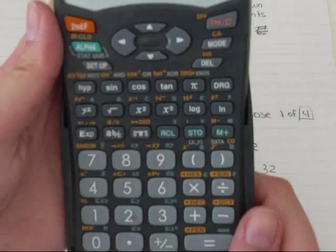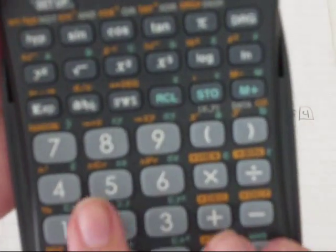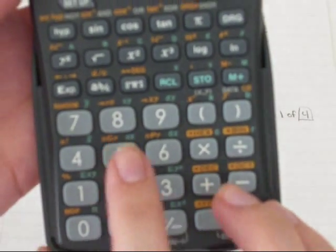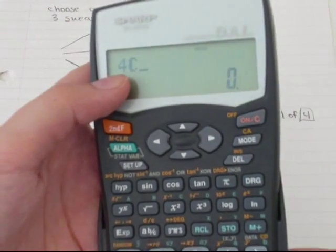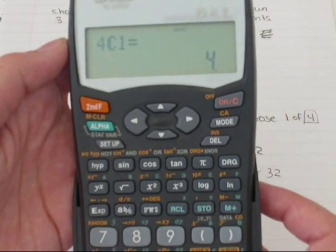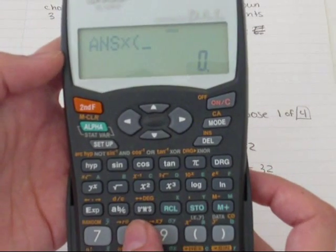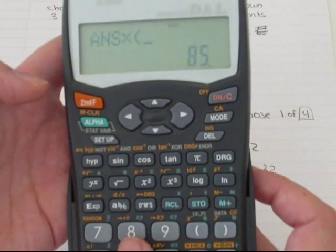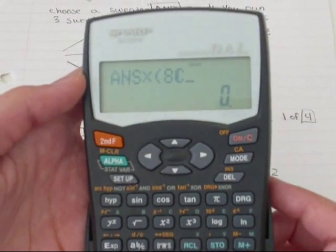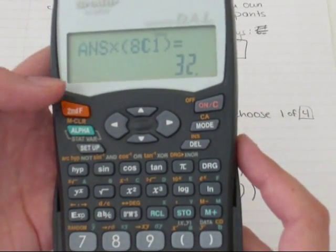So I'm going to do four choose one. So I'm going to go four, second function, you can see my NCR button. So I've got four choose one, and that's going to give me four. And then I'm going to go times. I've got eight, second function, five. Oops, that didn't work. Second function, five. Now I've got eight choose one equals 32.